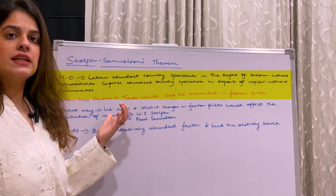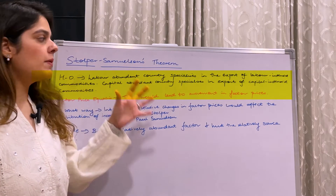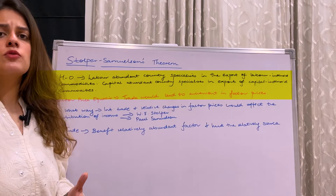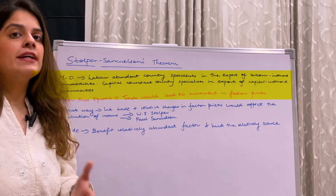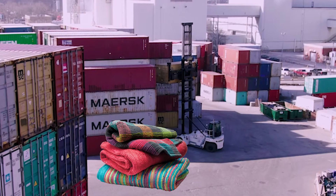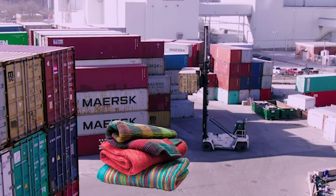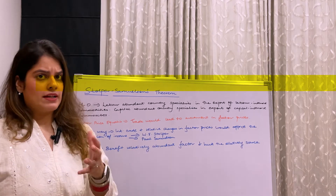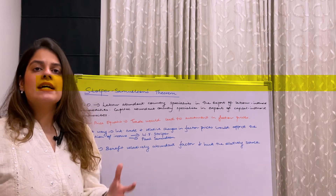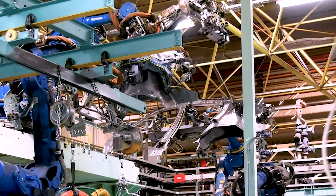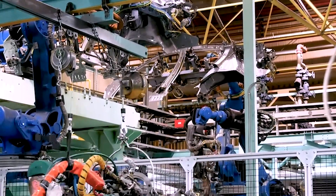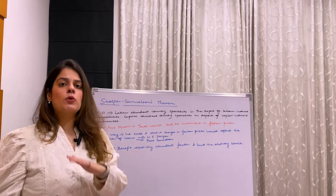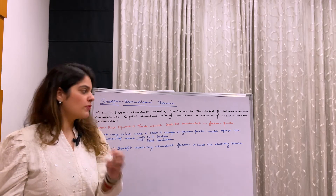In HO theory we study that a labor-abundant country like India will of course specialize in the export of labor-intensive goods — for example, cloth, which requires a lot of people. Whereas a capital-intensive country like the USA will obviously export capital-intensive goods, for example, steel. So India will export cloth and the USA will export steel — that was HO theory in brief.